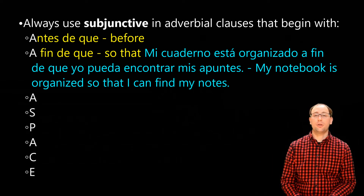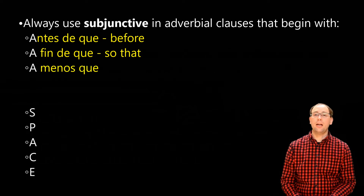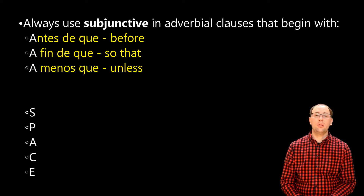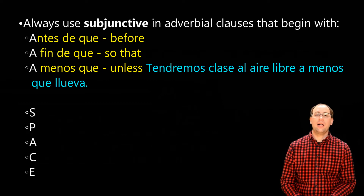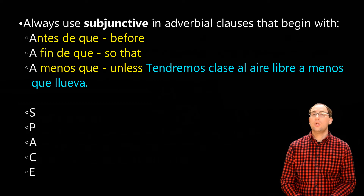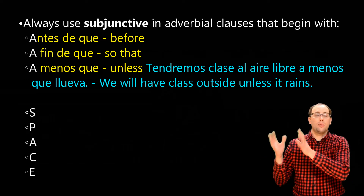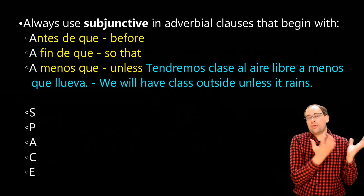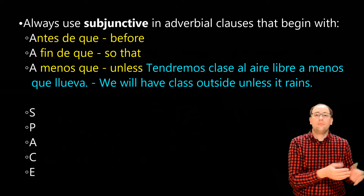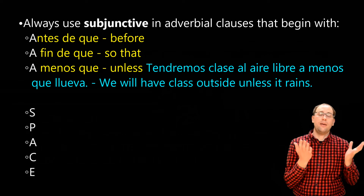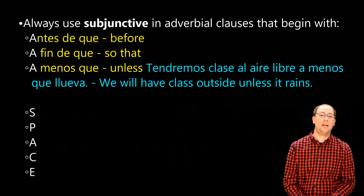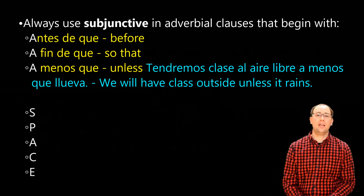The next A is 'a menos que,' which means 'unless.' We can see that in the example: 'Tendremos clase al aire libre a menos que llueva' — We will have class outside unless it rains. When I'm saying we will have class outside, I don't know if it's going to rain or not — I have no certainty of completion of the raining, which is why 'rain' must be put in the subjunctive.